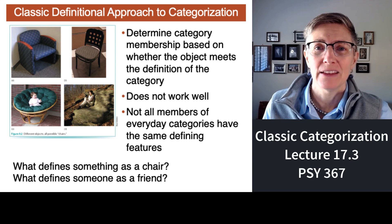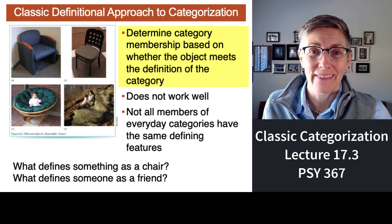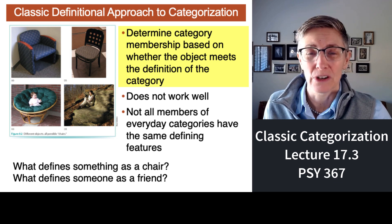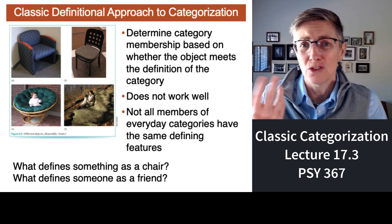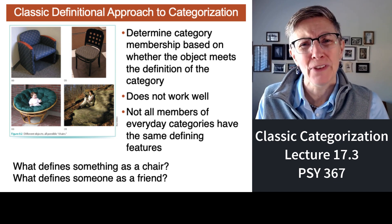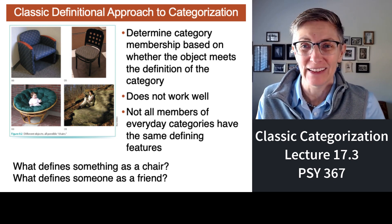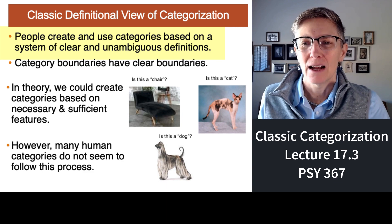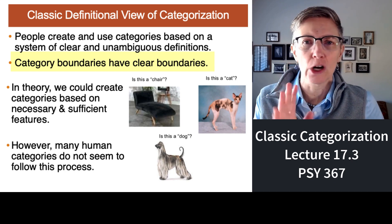According to the original definitional approach, whether something belonged in a category depended on whether that item was consistent with your definition of that category. But this just doesn't work. Take the example of chair — you'd think that would be an easy category. But we have beanbag chairs, and you could use a rock, a log, or a flipped-over box as a chair. What defines a chair? Even better, what defines a friend? The traditional view says categories are very clear and unambiguous, with nice sharp boundaries that no one disagrees about.